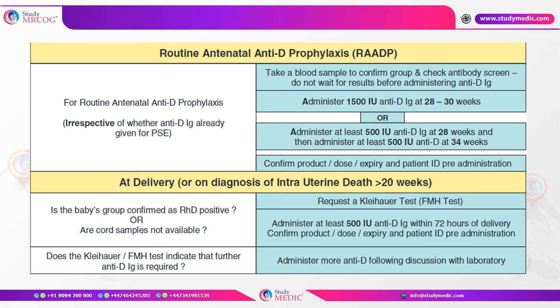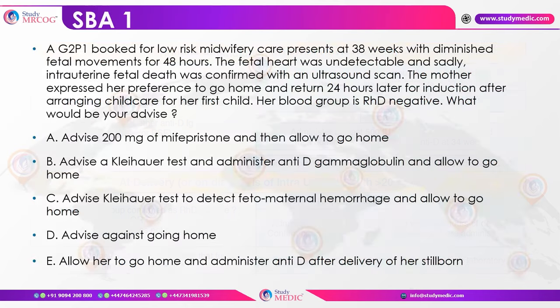Case question: Fetal heart was undetectable and IUD was diagnosed at 38 weeks, but the mother expressed preference to go home and return after 24 hours. Her blood group was Rh negative. The ideal advice is to first perform a Kleihauer test and administer anti-D immunoglobulin, then allow her to go home.